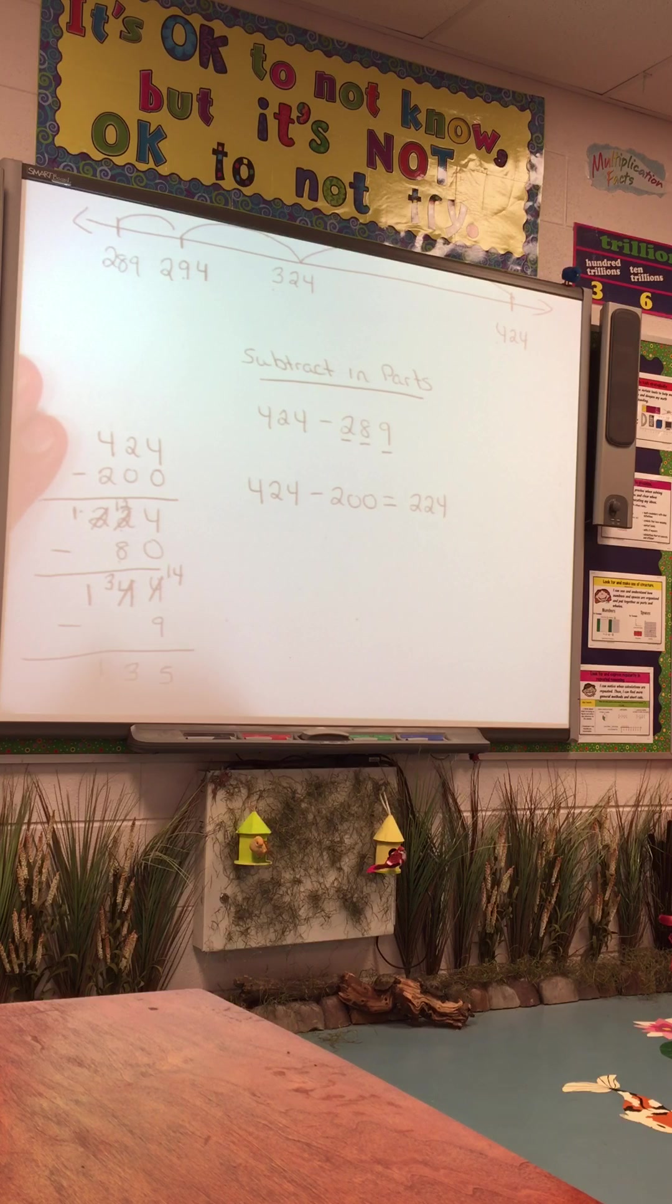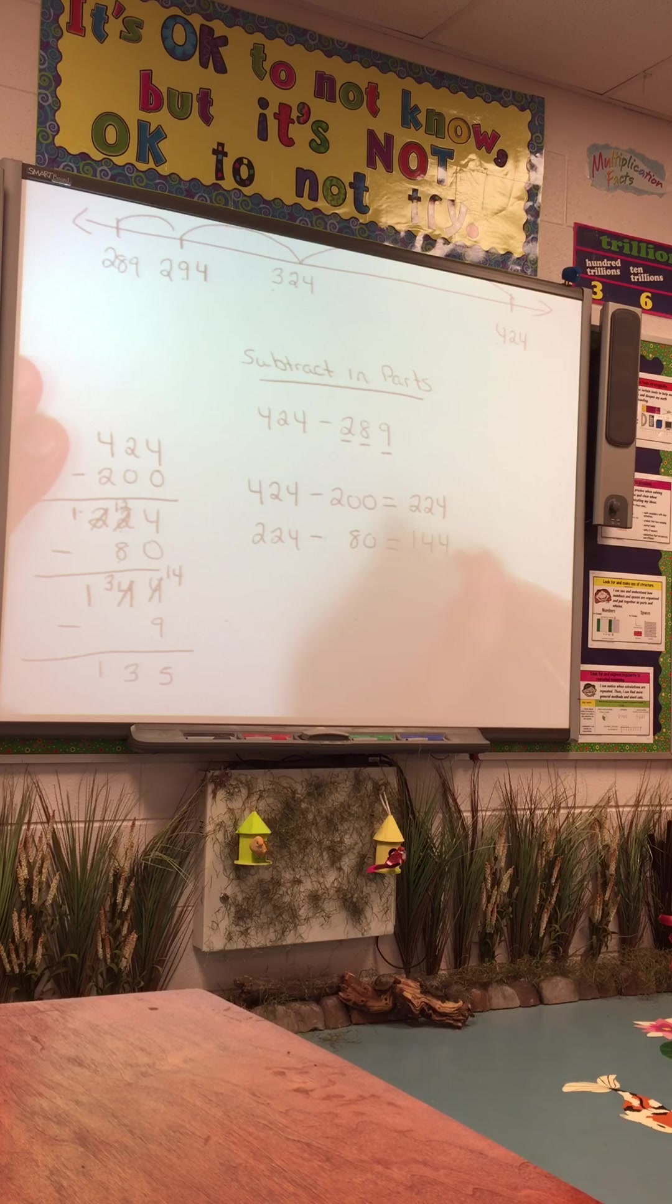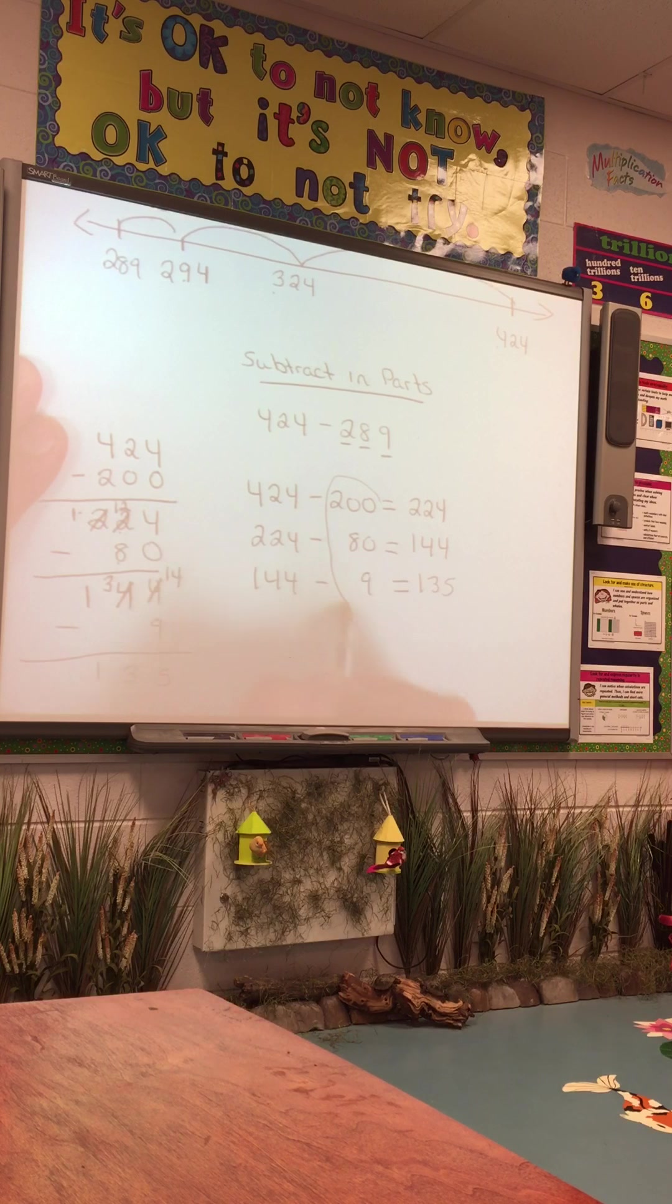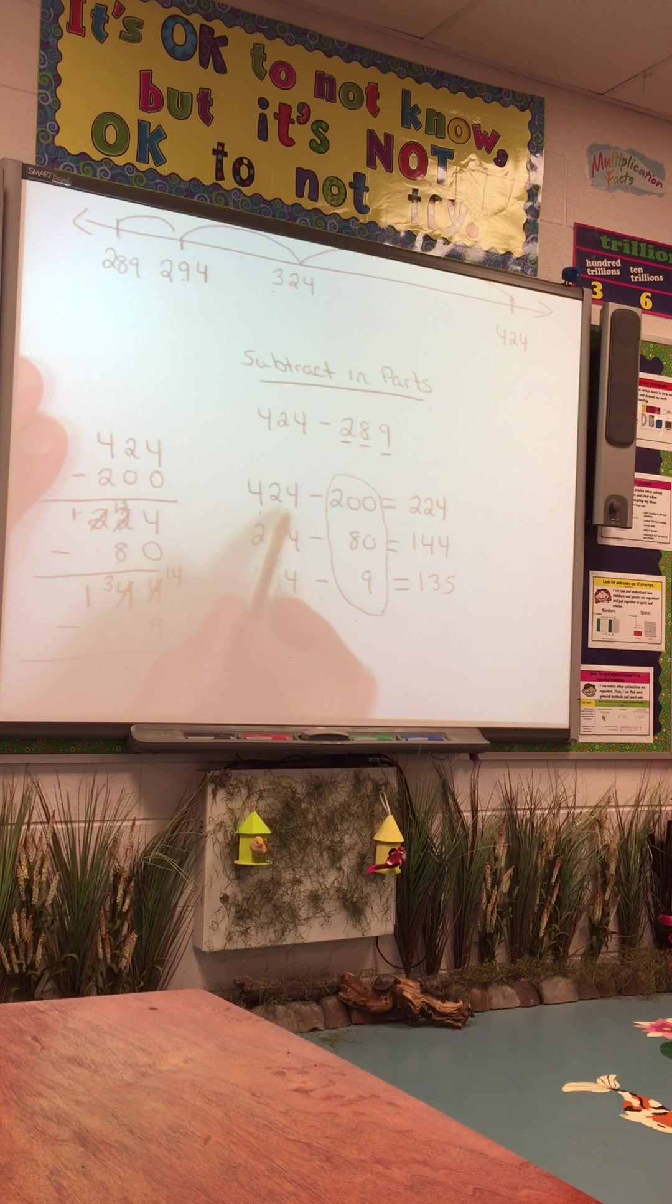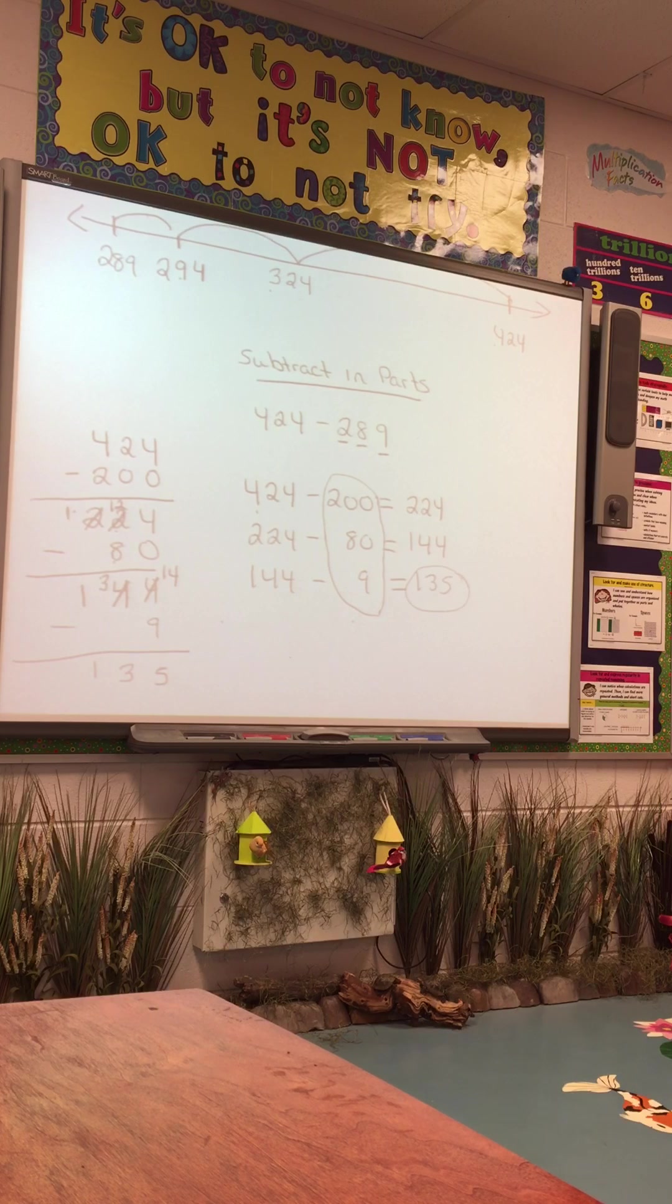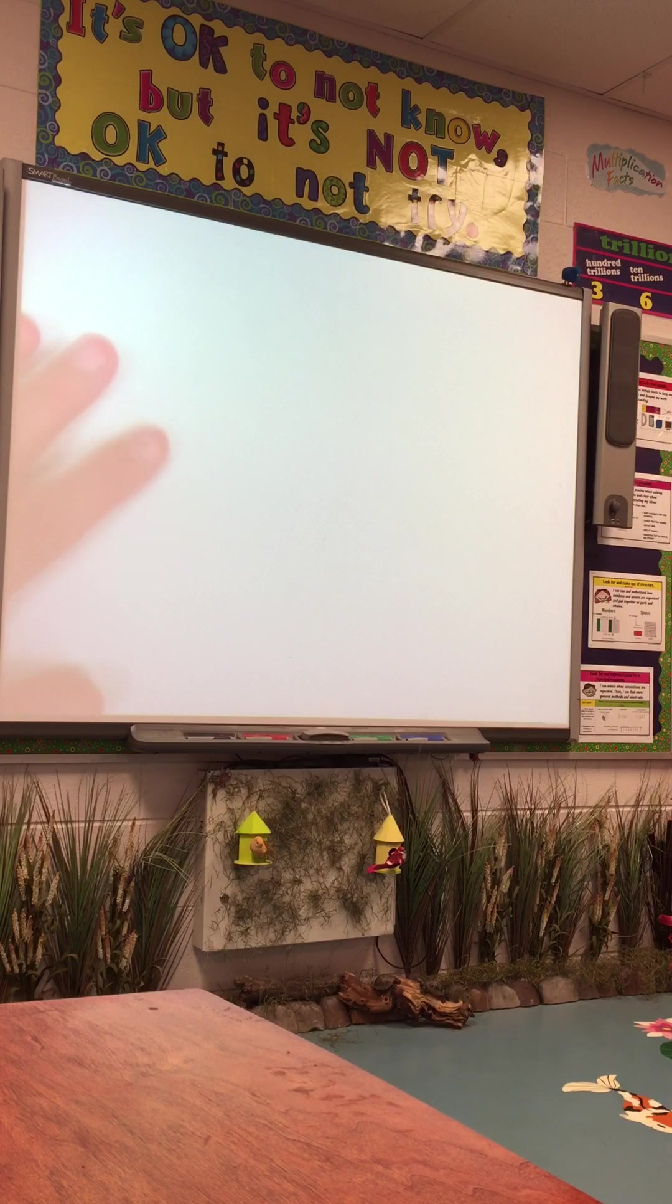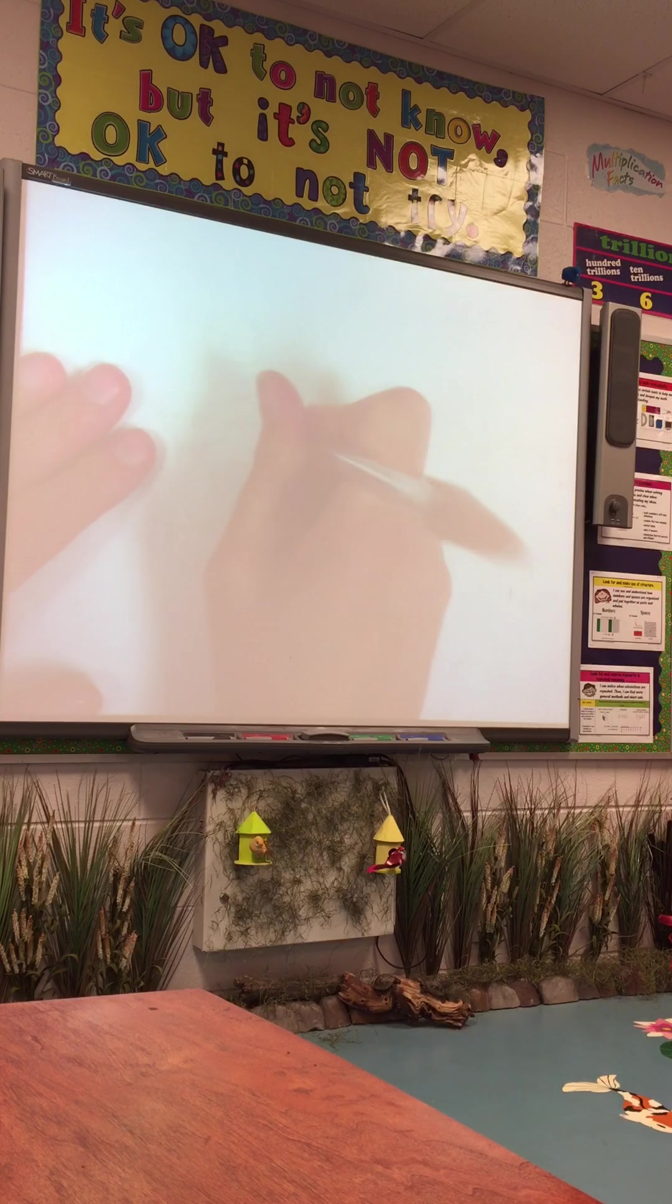Subtraction in parts can also look like this: 424 minus 200 equals 224, then 224 minus 80 equals 144, 144 minus 9 equals 135. You can see that we still found 424 minus 289. Our difference is 135. The last one is standard algorithm.